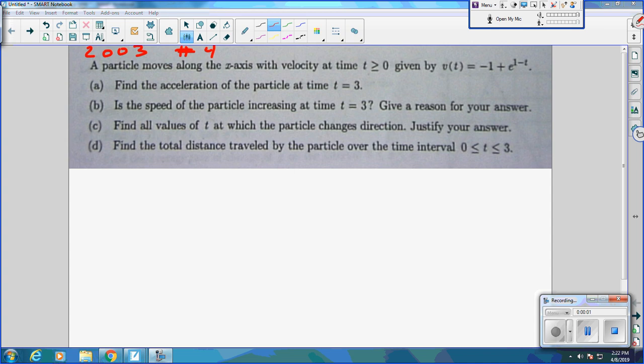Alright, so everybody, this is the AP problem from 2003, number 4, form B. And it says a particle moves along the x-axis with velocity at time t greater than or equal to 0, given by v(t) equals -1 + e^(1-t).